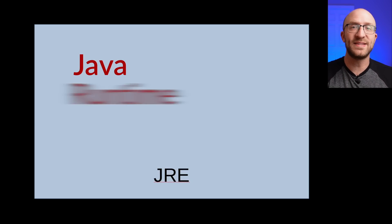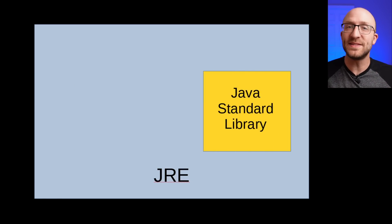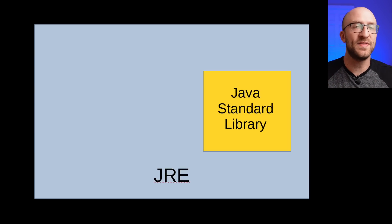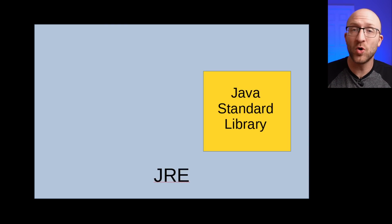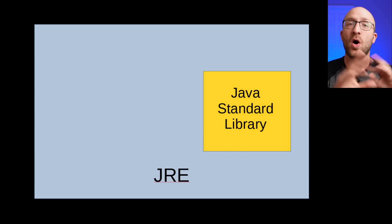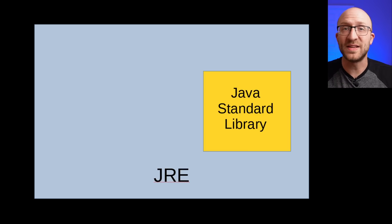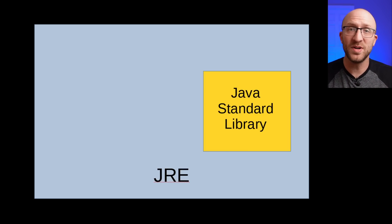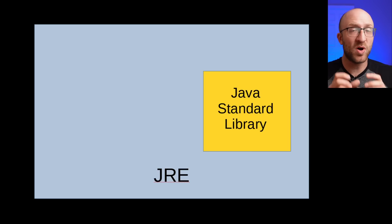The Java Runtime Environment contains everything you need to run a Java program on your computer, and that includes a couple of main things. It includes the Java Standard Library, which is basically just a bunch of helper classes and files that all Java programs use. That includes things like all the classes in the java.lang package, like String, Math, Exception, and Throwable, and even the Object class, which is the root of all other Java classes. It has java.util for things like lists, sets, and maps, java.io for all kinds of input and output, java.sql for interacting with databases, and tons more — all built in as part of the JRE.